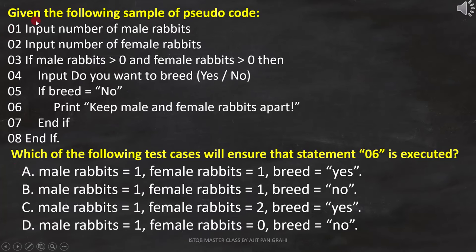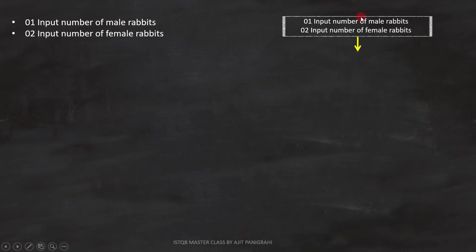Now let's analyze the pseudocode to get the correct answer. First line is input number of male rabbits. Second line is input number of female rabbits. Both lines are statements, so we can represent it like this.